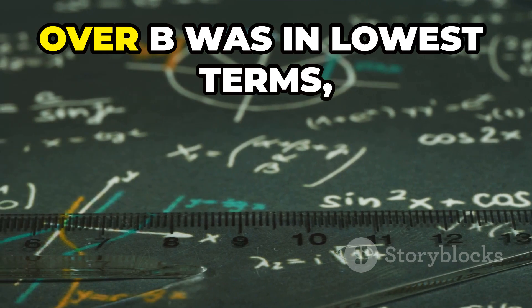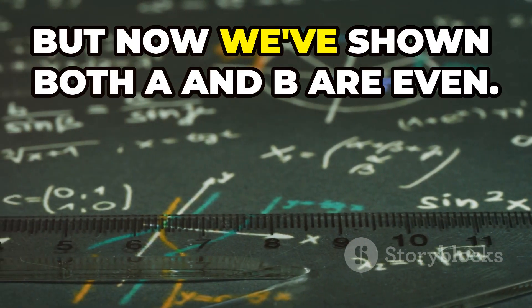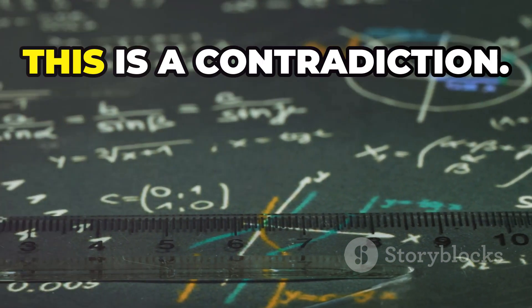Contradiction. We initially assumed a over b was in lowest terms. But now we've shown both a and b are even. This is a contradiction.